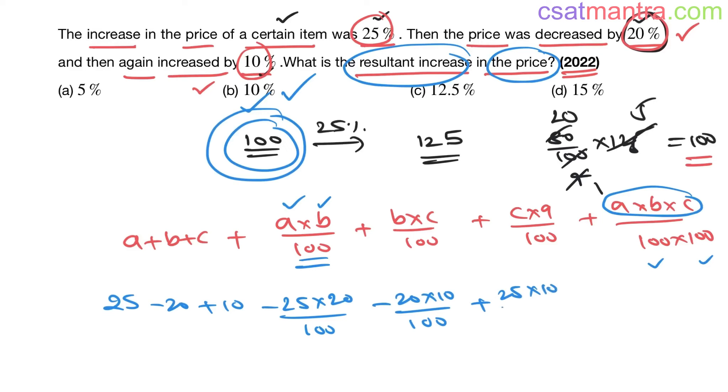So 25 plus minus 20 plus 10, how much? 15. 25 into 20 is 500, divide by 100 is 5, so minus 5. Minus 20 into 10 is minus 200, divide by 100 is minus 2. 25 into 10 is 250, divide by 100 is plus 2.5.